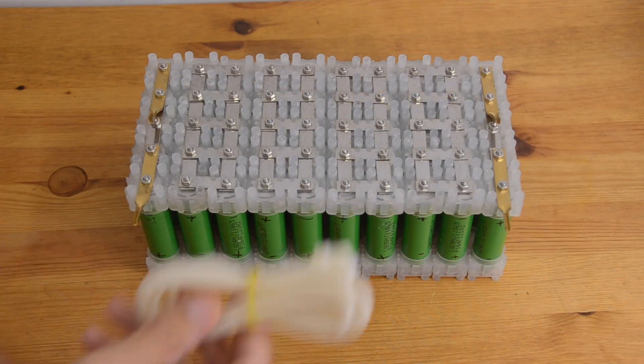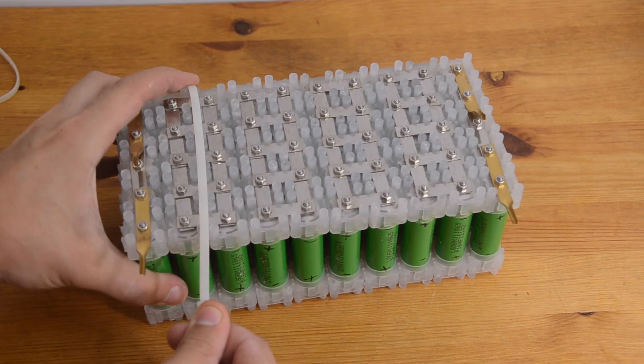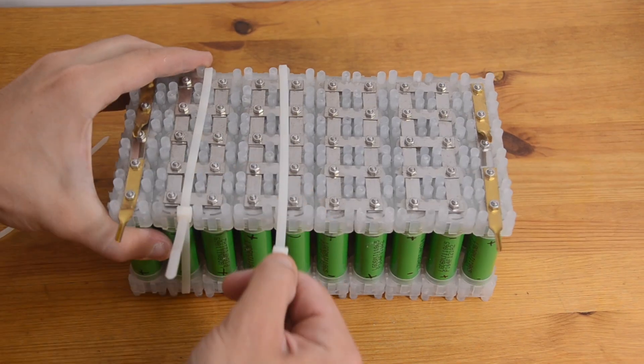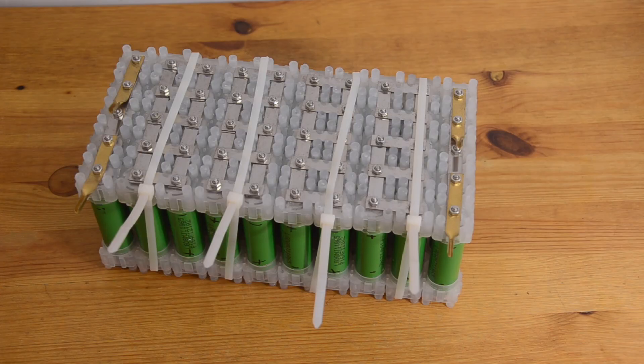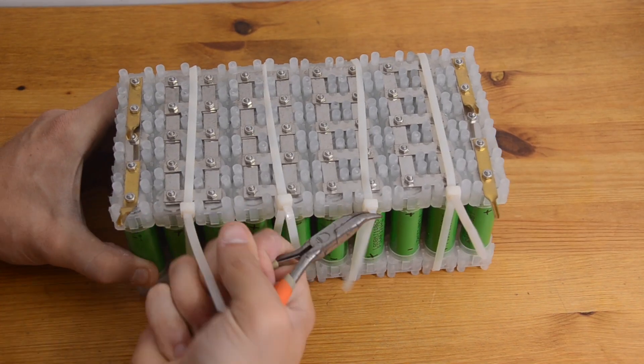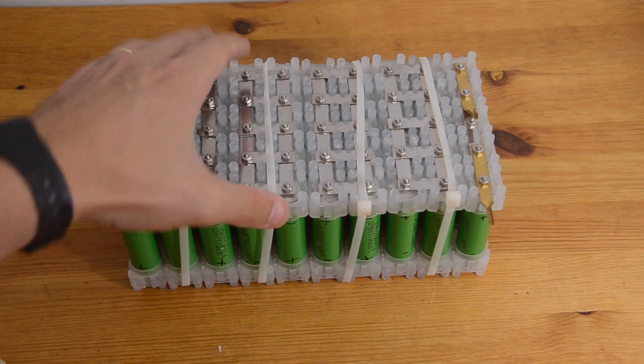Now the kit does come with these cable ties that will go around and cinch the pack together. You don't really need them. The terminal caps hold the cells really tight. It's actually a little tricky to pull them off even. But you know this could just be a little extra insurance to make you feel better if you're a little worried about vibration in your pack. But like I said you don't really need them.